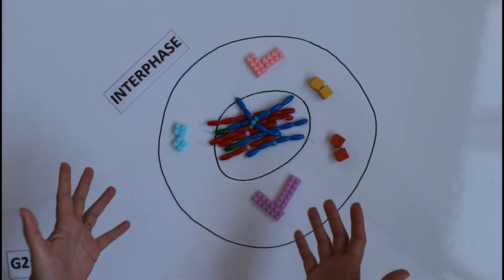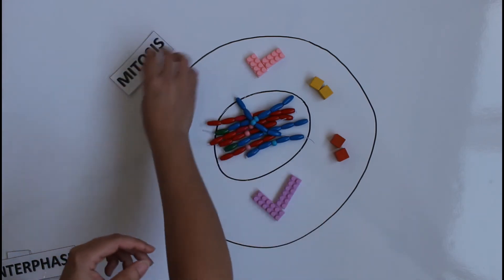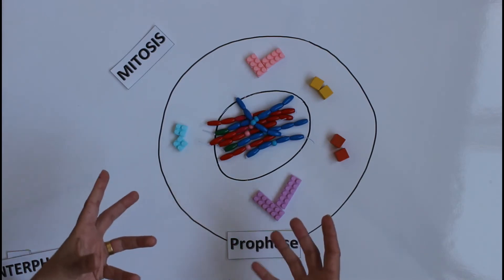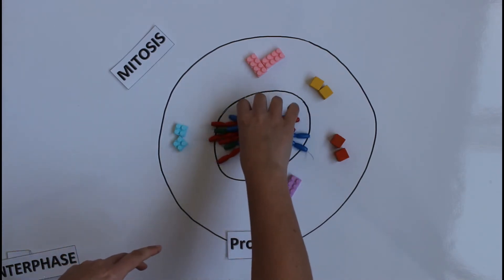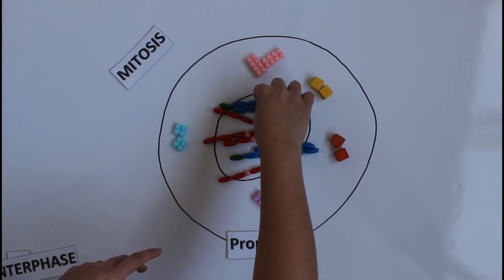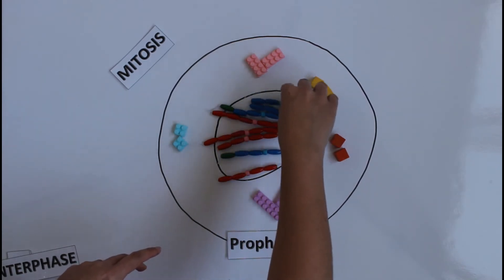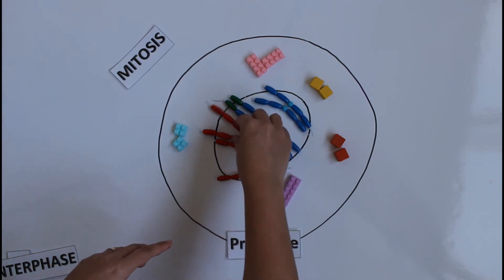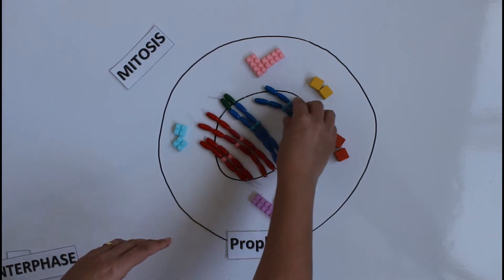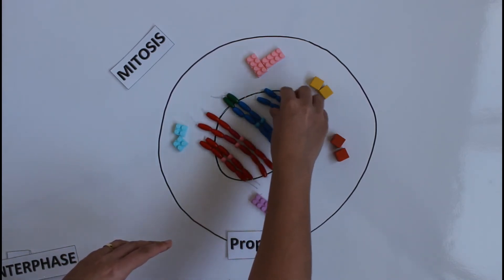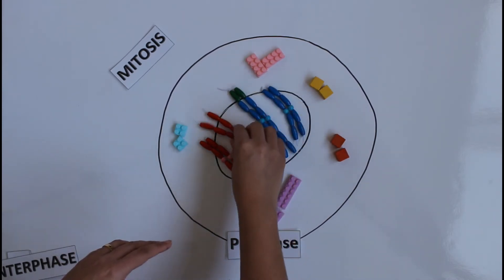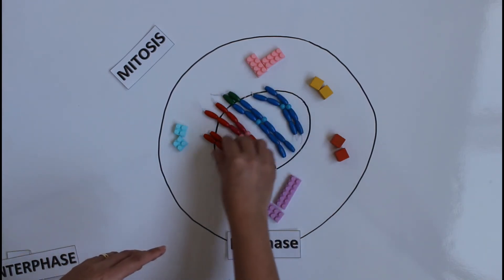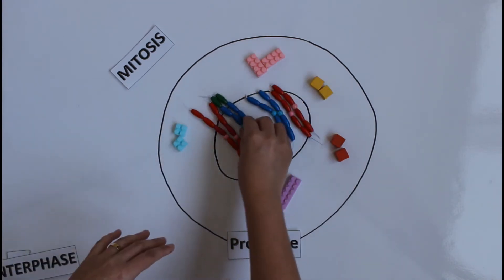Today I'm going to talk about mitosis. The first phase of mitosis is prophase. In prophase, all the DNA that was disorganized now condenses and organizes with the help of proteins called histones. Each chromosome now has its sister chromatid — each coupled chromosome and its sister chromatid is now organized as a visible chromosome. So in prophase, I can see the chromosomes forming.